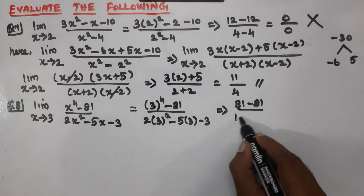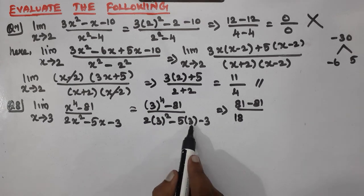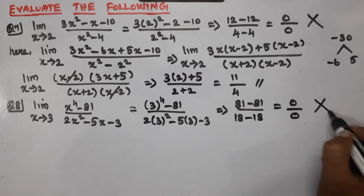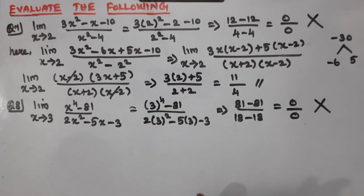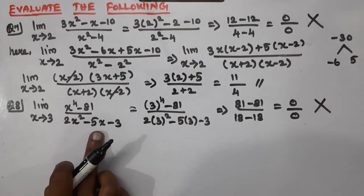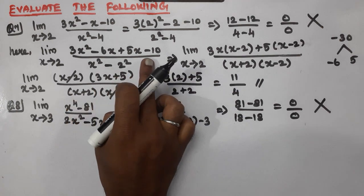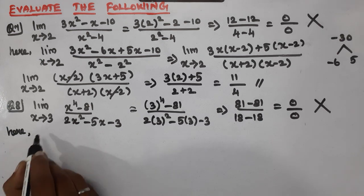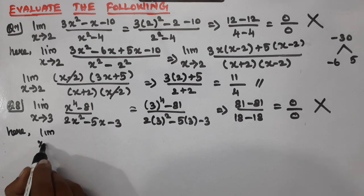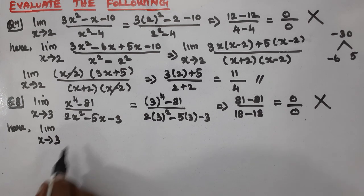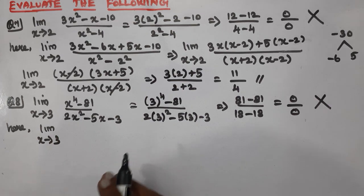Substituting x=3 gives 0 by 0. So what do I do? Since we have x squared terms, I will use factorization. Here the limit is x tends to 3.